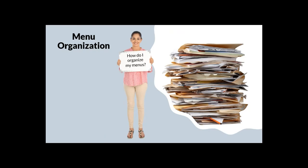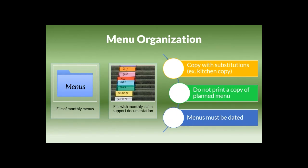The last question we're going to cover today is: how do I organize my menus? This answer is for all programs except family daycare home providers, who should contact their sponsor. Menus can be organized by keeping them in a file designated for menus with a copy of each month's menu, or by keeping them on file by month with the monthly claim support documentation that includes menus, production records, and meal count records. The menu on file must include meal substitutions and changes — use the copy posted in the kitchen rather than a clean copy, as there are often menu changes and you need to show what was actually served. Menus must also be dated to include the month, day, and year, which is also required for cycle menus.